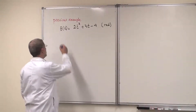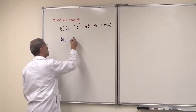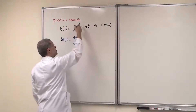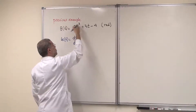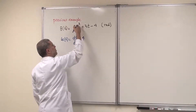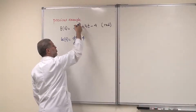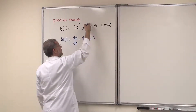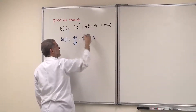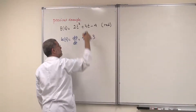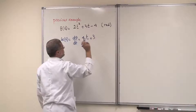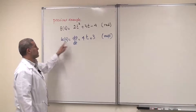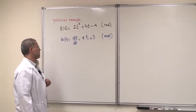To calculate the angular velocity ω(t), you take the time derivative. Differentiating: bring the 2 down — 2 times 2 gives 4t; then 3 times 1 gives 3t⁰ = 3; and the constant −4 gives 0. So ω(t) = 4t + 3, in radians per second.